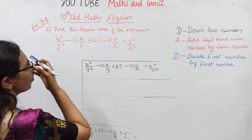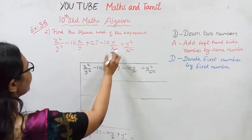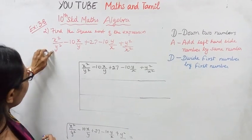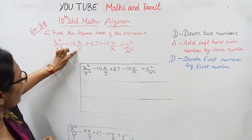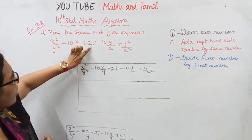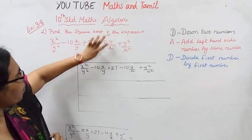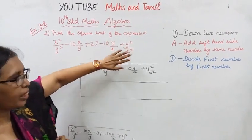Find the square root of the expression. This is a fraction: x square by y square, x by y constant, that is y by x, y square by x square.